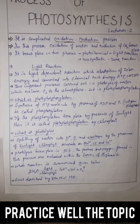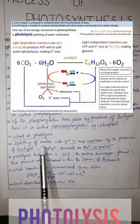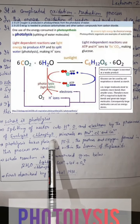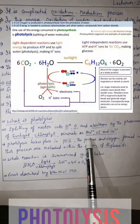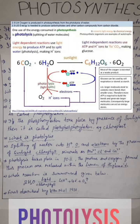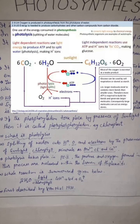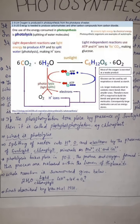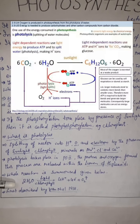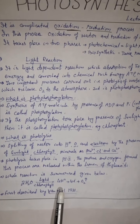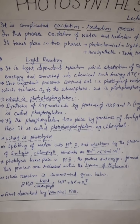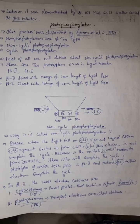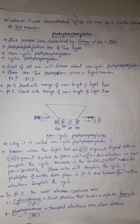Photolysis is nothing but the splitting of water into hydrogen, protons, oxygen, and electrons, by the presence of sunlight, chlorophyll, and minerals like magnesium, chlorine, and calcium. Photolysis takes place in photosystem 2; protons and oxygen are released within the lumen of the thylakoids. The reaction: two molecules of water in the presence of light and chlorophyll produce four protons, four electrons, and oxygen. This photolysis was first described by Van Niel in 1931 and later demonstrated by Robert Hill in 1937, so it is also called the Hill reaction.